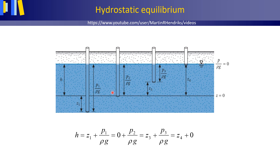Note that the screen of the leftmost pitometer lies below the reference level, and that the elevation head Z1 is therefore a negative number. Also note that the screen of the rightmost pitometer is located at the water table, and that the pressure head thus equals zero meters. This is also stated in the accompanying equation. Below the water table, the pressure heads are positive. Above the water table, in the unsaturated zone, the water pressures are negative. Note that under hydrostatic equilibrium conditions, meaning no water flow, the water table and the hydraulic heads measured in the pitometers have the same level. This is only the case for hydrostatic equilibrium.